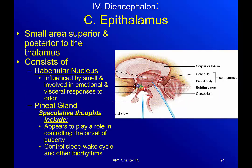The epithalamus is located back here — a small area superior and posterior to the thalamus. It includes the habenula and the pineal body. The habenula nucleus is influenced by smell and involved in emotional and visceral responses to odor. For example, my mom wears White Diamonds perfume — she's worn it for about 30 years — so when I smell it, I immediately think of her. That's an emotional response to odor.